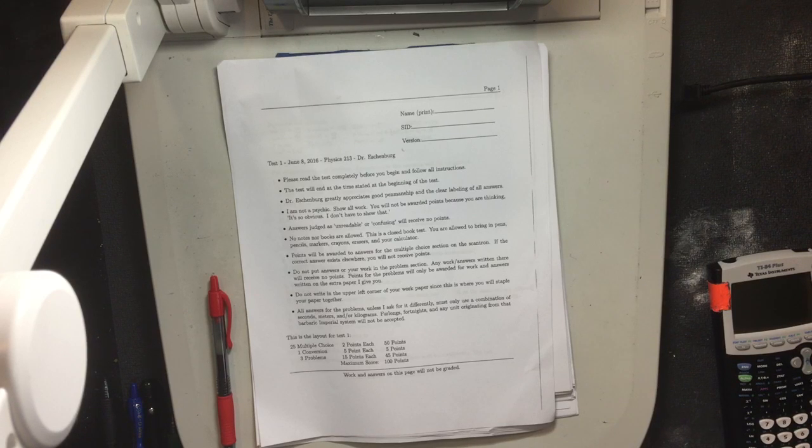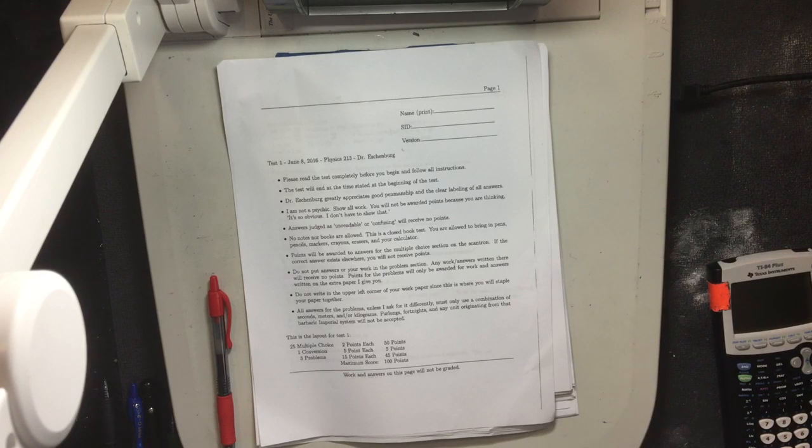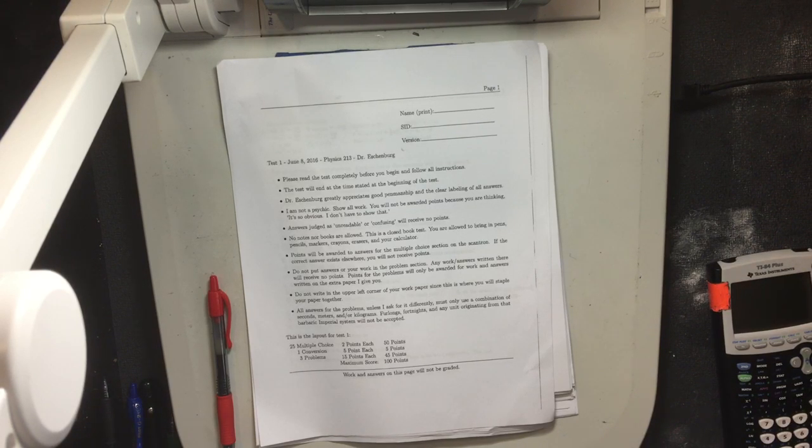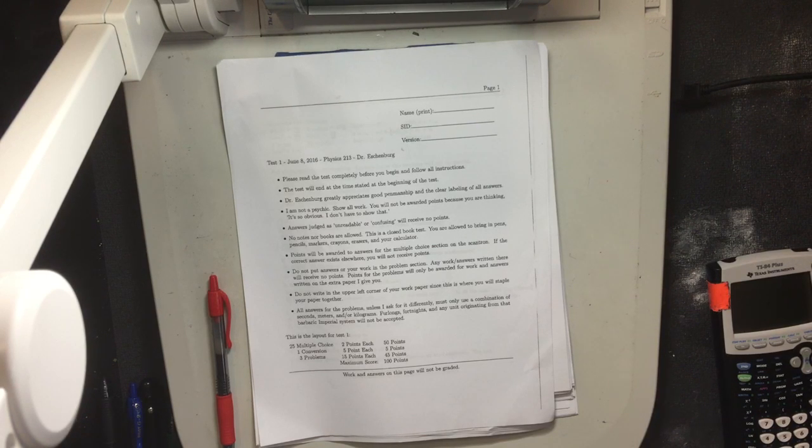Test will start here at 2:30. Bring pens, pencils, eraser, pencil leads, calculator, ruler, highlighters, whatever writing utensils you want to bring. No book, no notes. Notes will be provided in the sense that there will be an equation sheet given to you. Extra paper will be given to you. Bring a green scantron, those narrow ones.